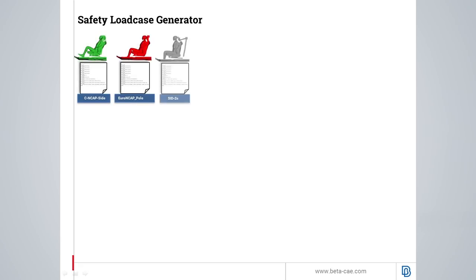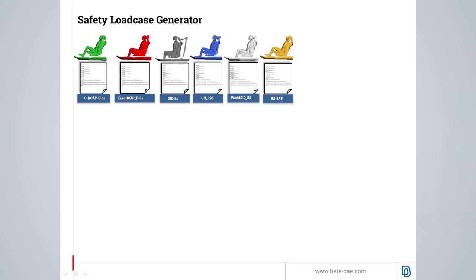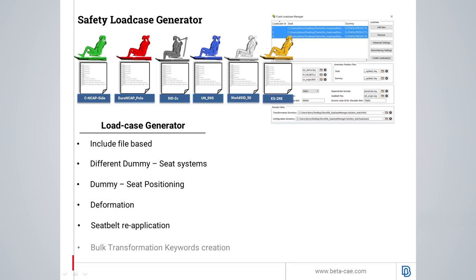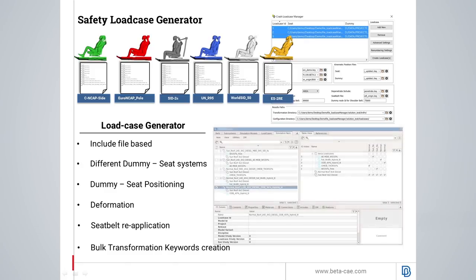The tool that couples all the previous features and functionalities is the safety load case generator. The tool functionality is based on include files. It offers the ability to treat simultaneously different combinations of seats and dummies. For each combination, dummy and seat positioning is applied. The seat is deformed in order to depenetrate. The seatbelt is reapplied and bulk transformation keywords are created during output.